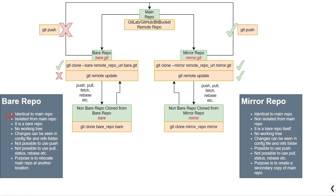The first point is that a bare repository will be identical to the main repository. Consider that this is the main repository available in the cloud — either in GitLab, GitHub, or Bitbucket. This will be the remote or main repository. If you want to create a bare repository from this main repository, you can use this particular command to create a bare repository.